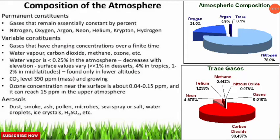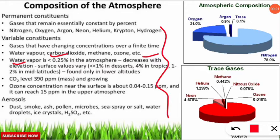Water vapor in the atmosphere is approximately less than 0.25% of the total constituent. Water vapor concentration decreases with elevation. Surface values also vary: above desert regions it is less than 1%; in the tropics it is about 4%; while in mid-latitudes it ranges from 1 to 2%.